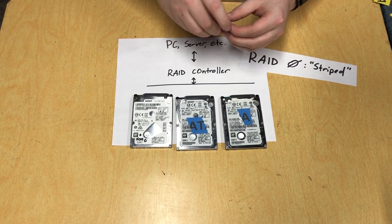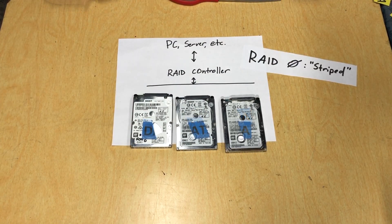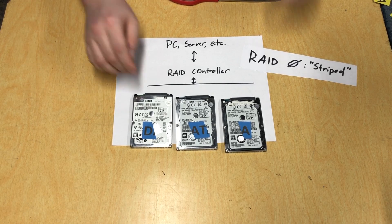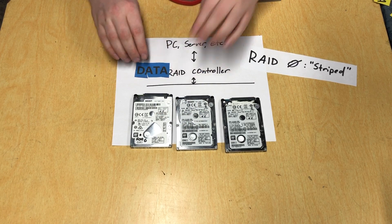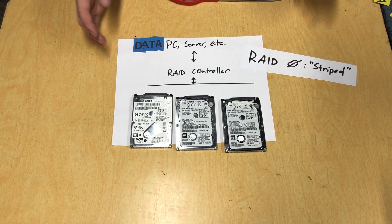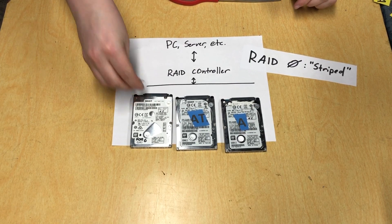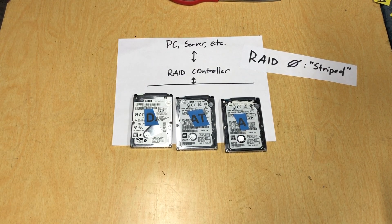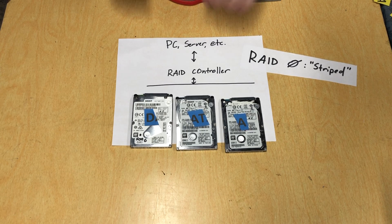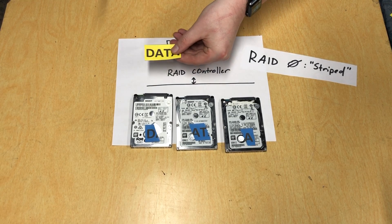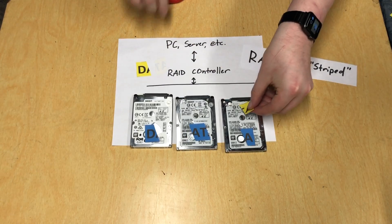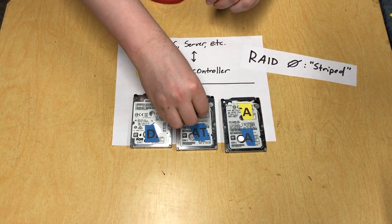What the RAID controller does with RAID 0 is it cuts the data up into as many hard drives as there are in the actual array, and it distributes the data like so. And when the computer wants the data back, it communicates with the RAID controller, which requests all the chunks of data from the drives, puts it back together, and then presents that whole data to the computer. Remember, the data is actually stored on the drives like this. Now let's say the computer has some more data that it wants to write. It brings that data to the RAID controller, and the RAID controller splits it up across as many hard drives as there are and writes it like so.